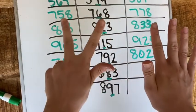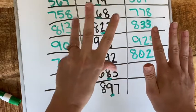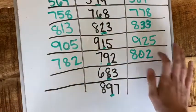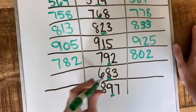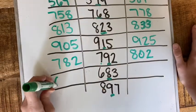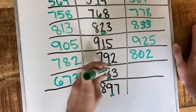There you go. 683, we're going to minus 10, 673, and plus 10, 693.